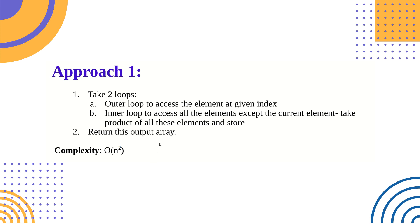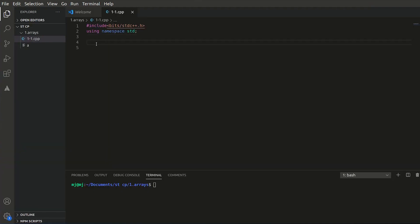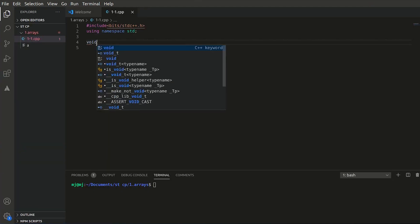The first approach uses two loops: the outer loop accesses the element at the given index, and the inner loop takes the product of all elements except the current outer element. We then return this output array.